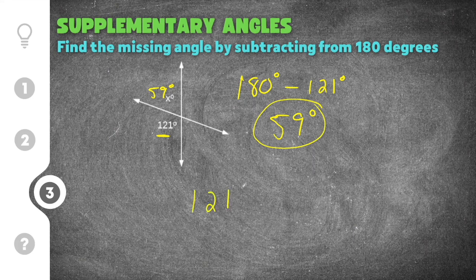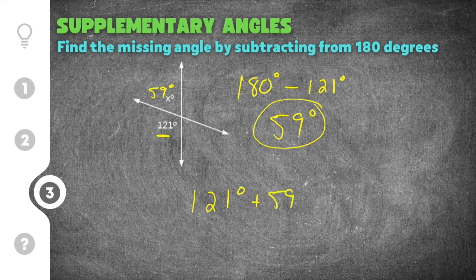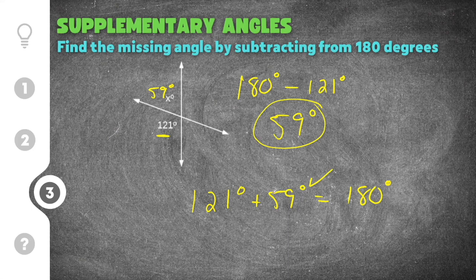So now we know this is going to be equal to 59 degrees. And if you want to double check like I said you can say 121 plus 59 equals 180 degrees. So we know 59 has to be correct.